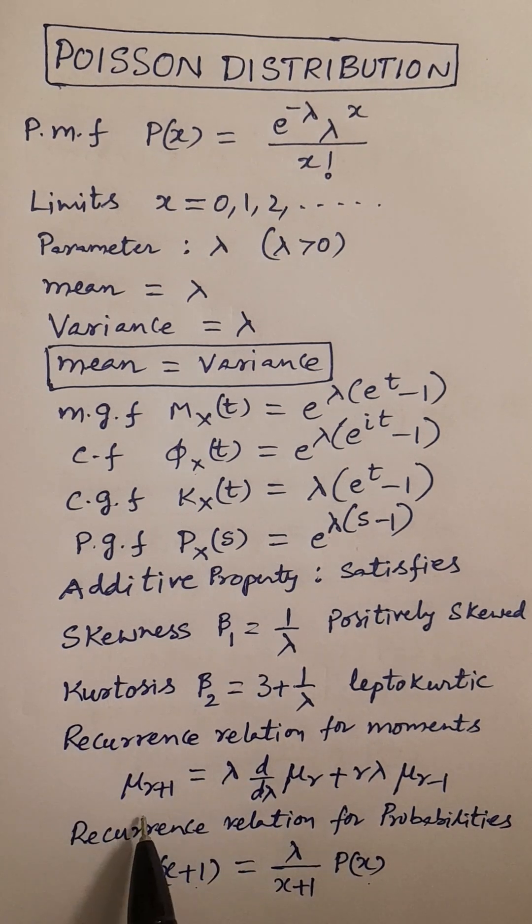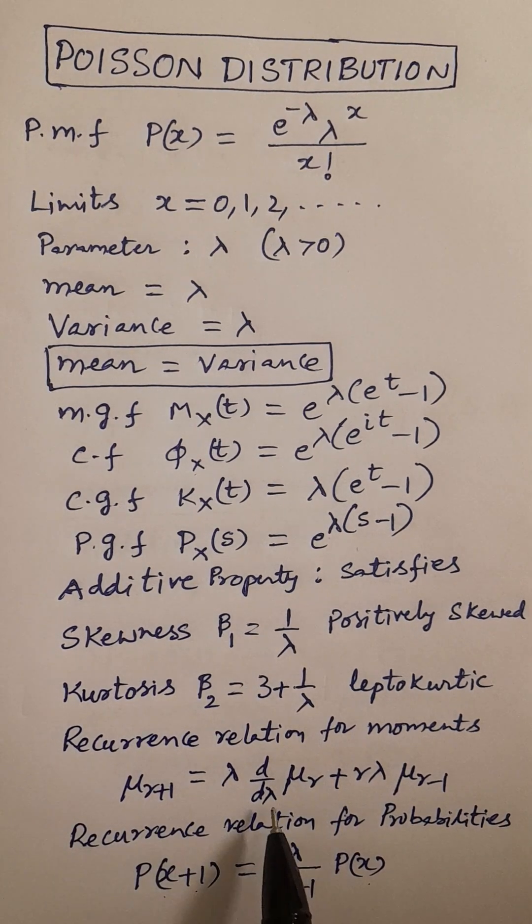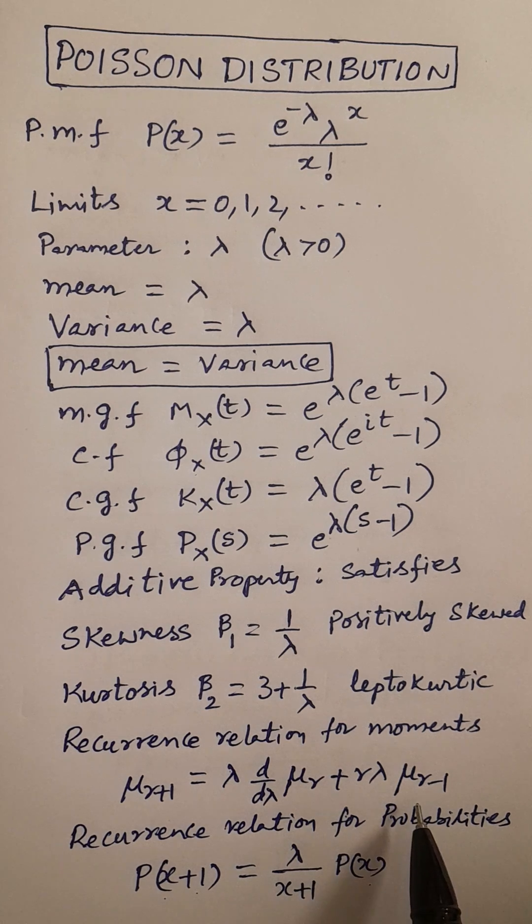Recurrence relation for moments: mu_(r+1) is equal to lambda into d by d lambda of mu_r plus r lambda into mu_(r-1).